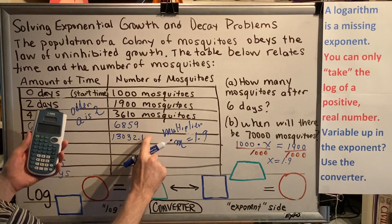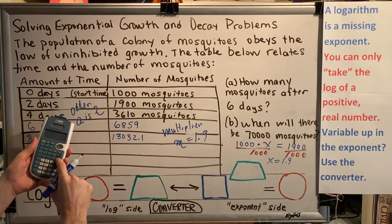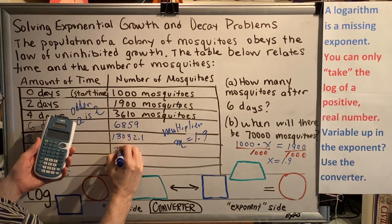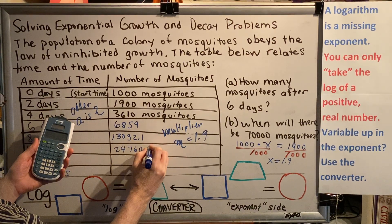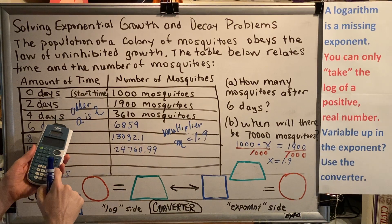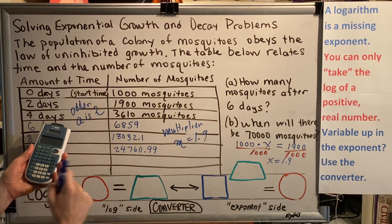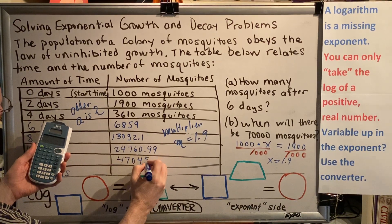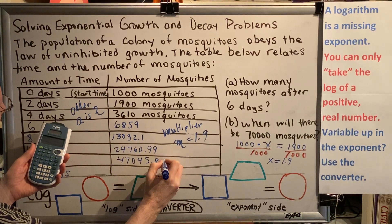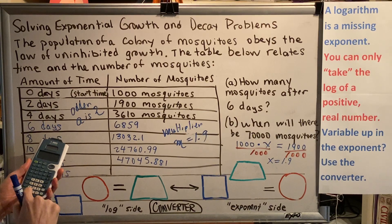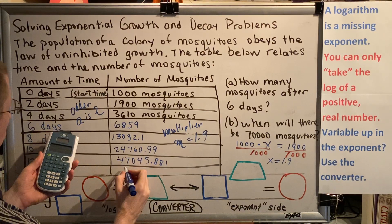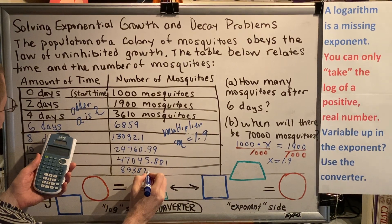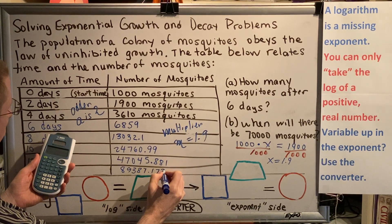When we answer questions, we'll consider rounding. But when we make our model, we leave all of our decimals. Multiplying by 1.9 again, now we get 24,760.99. Multiplying by 1.9 again, we get 47,045.881. And multiplying by 1.9 one last time, we get 89,387.1739.